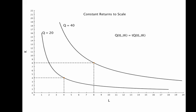A production process is characterized by constant returns to scale if the function is homogeneous of degree 1. Doubling inputs from 4 to 8, for example, exactly doubles output.